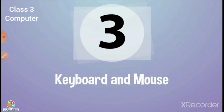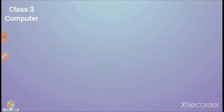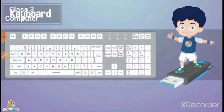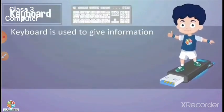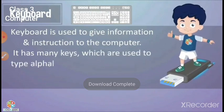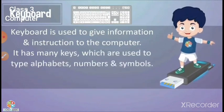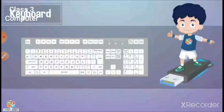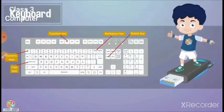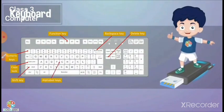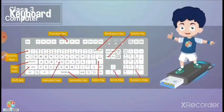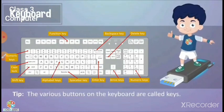Chapter 3 is named 'Keyboard and Mouse.' Keyboard is used to give information and instruction to the computer. It has many keys which are used to type alphabets, numbers, and symbols. The parts of keyboard include function keys, backspace keys, delete keys, enter keys, spacebar keys, arrow keys, and numeric keys.